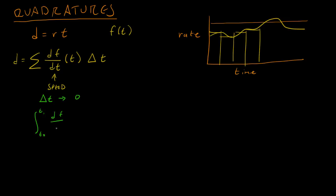We have this speed function of time, and then it is an integral with respect to the time variable. If you can solve this integral in closed form, it will give you a perfect answer for the total amount of distance someone has gone — even though their speed is varying over time — it will tell you exactly the distance traveled between two points in time.